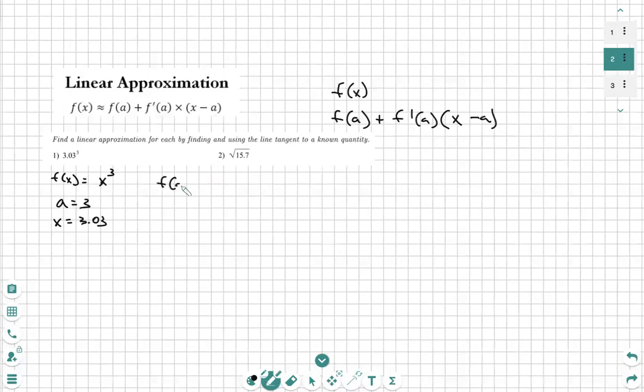First thing we're going to do is find f of a. f of a is just plugging in whatever a is into x. And in this situation, our f of a is 3. So we're going to solve for f of 3. This turns into 3 cubed or 27.